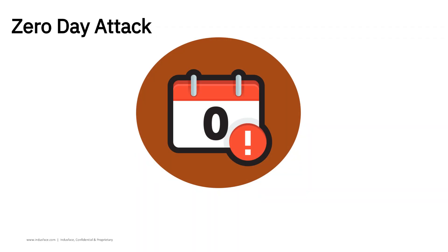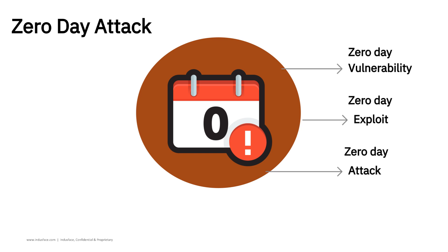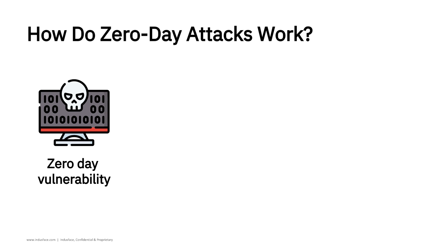To truly understand a zero-day attack, you need to know three key terms: zero-day vulnerability, zero-day exploit, and zero-day attack. A zero-day vulnerability is a flaw in software that even its creator doesn't know exists. No fix, no defense — just waiting to be discovered by the attacker.